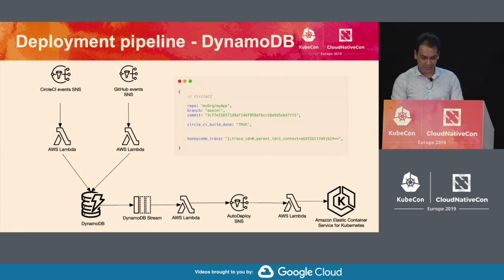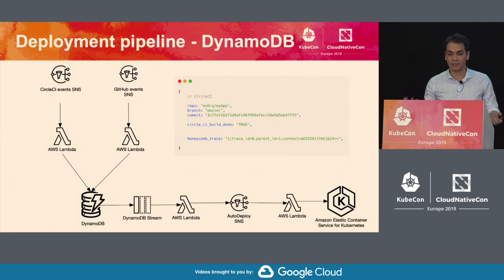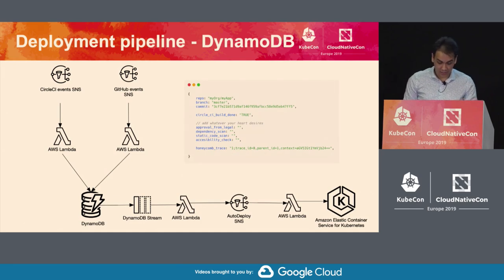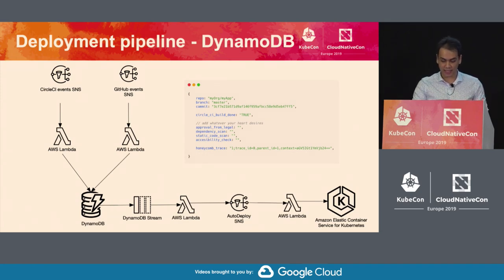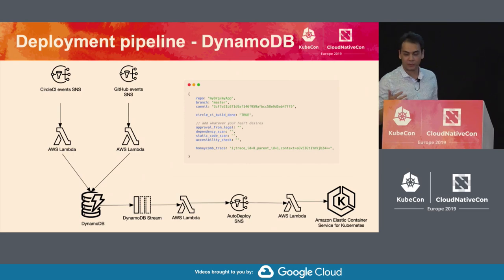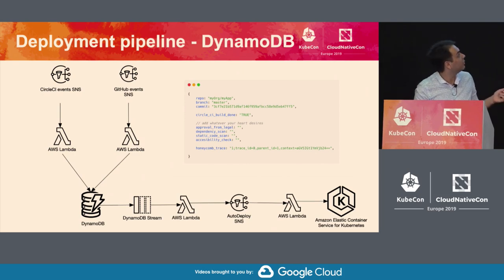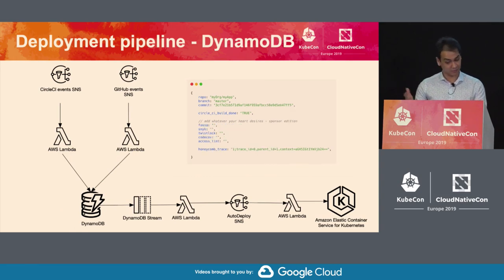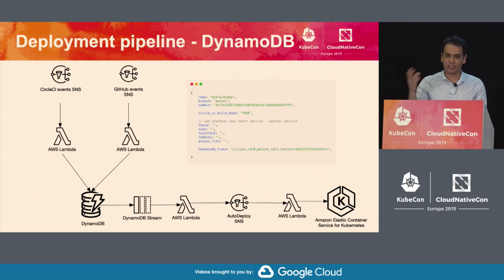The CircleCI event then comes in and marks the build as done and successful. If this event never comes, it's clear the build failed and we can see that in the trace. This is just a demo with two data sources — CircleCI and GitHub — but you can add as many as you want. The promoter Lambda checks if all conditions are true. You can check for legal approval, static code analysis, security checks — whatever you need. As a startup especially, you want to be able to integrate and plug tools in and out easily and fast.